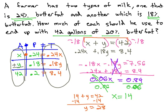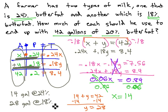Let's clearly identify what each variable is in terms of the problem. X was the amount, according to our table here, at 24% butterfat. So we have 14 gallons at 24% butterfat. Y, the 28 gallons, looking at our table, we see is at 18% butterfat.